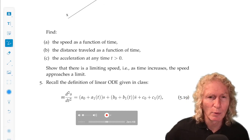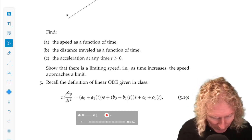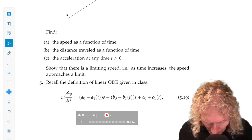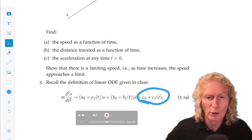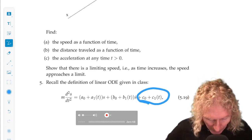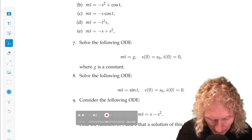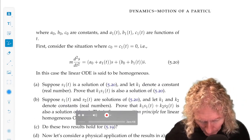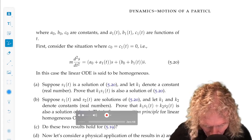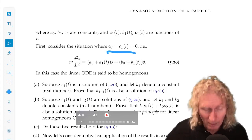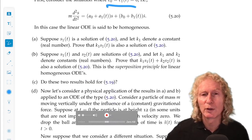Problem five is about properties of ordinary differential equations. This is a linear ODE. And the focus is on these last terms, c naught plus c1 of t. Those are the terms that do not multiply s or s dot. If those two terms are zero, we refer to these ODEs as homogeneous.